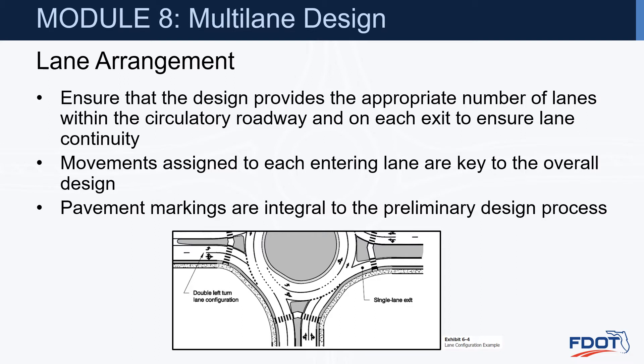Lane arrangement. We need to ensure that the design provides the appropriate number of lanes within the circulatory roadway and on each exit to ensure lane continuity. Movements assigned to each entering lane are key to the overall design, and pavement markings are integral to the preliminary design process. As the example shows, we have two lanes entering and two lanes circulating, but because the leftmost lane is a left-only, we only need one lane exiting.